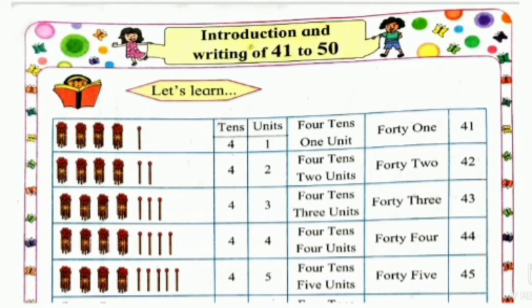See children, a group of 10 objects is tens and single object is units. Here, we have 4 tens. 1, 2, 3, 4. These are 4 tens and 1 unit. So, 4 tens and 1 unit is 41.